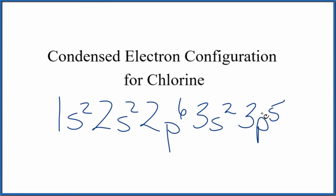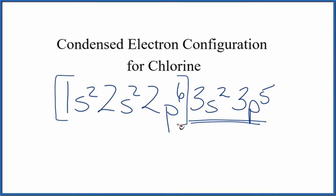When we write condensed electron configurations, we're only interested in the valence electrons. Those are the ones in the highest energy level. So we just want to show this, and then we want to condense this part right here.